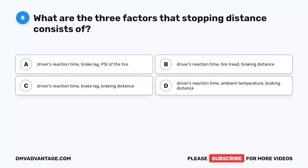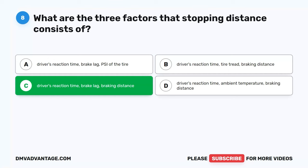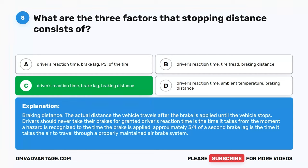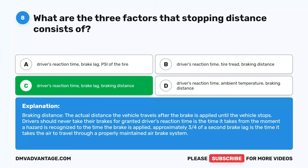Question 8. What are the three factors that stopping distance consists of? A. Driver's reaction time, brake lag, PSI of the tire. B. Driver's reaction time, tire tread, braking distance. C. Driver's reaction time, brake lag, braking distance. D. Driver's reaction time, ambient temperature, braking distance. The correct answer is C. Braking distance is the actual distance the vehicle travels after the brake is applied until it stops. Driver's reaction time is the time from when a hazard is recognized to when the brake is applied — approximately 3/4 of a second. Brake lag is the time it takes air to travel through a properly maintained air brake system.